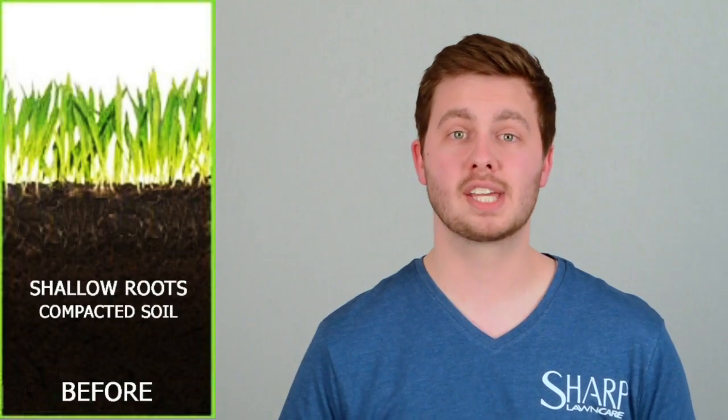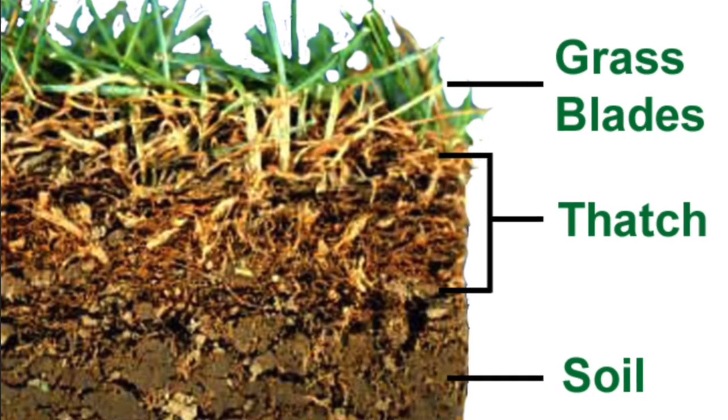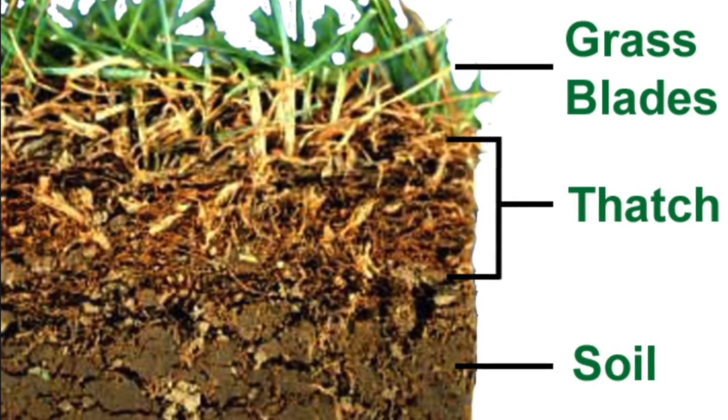Over time, the soil in your yard gets compacted, and a layer of dead leaves and grass accumulates above this called the thatch layer. This thatch layer prevents water, air, and critical nutrients from flowing to your root system.